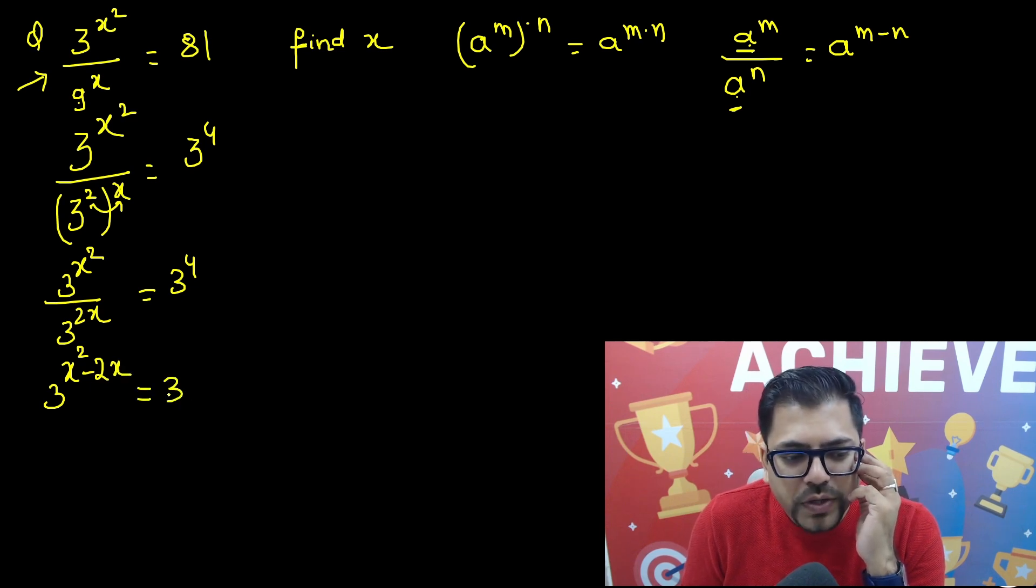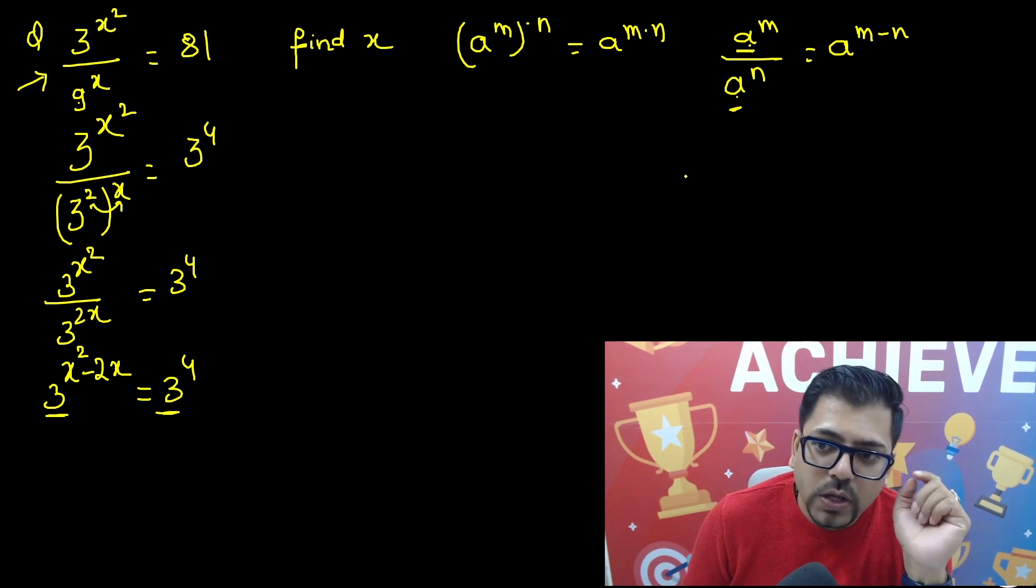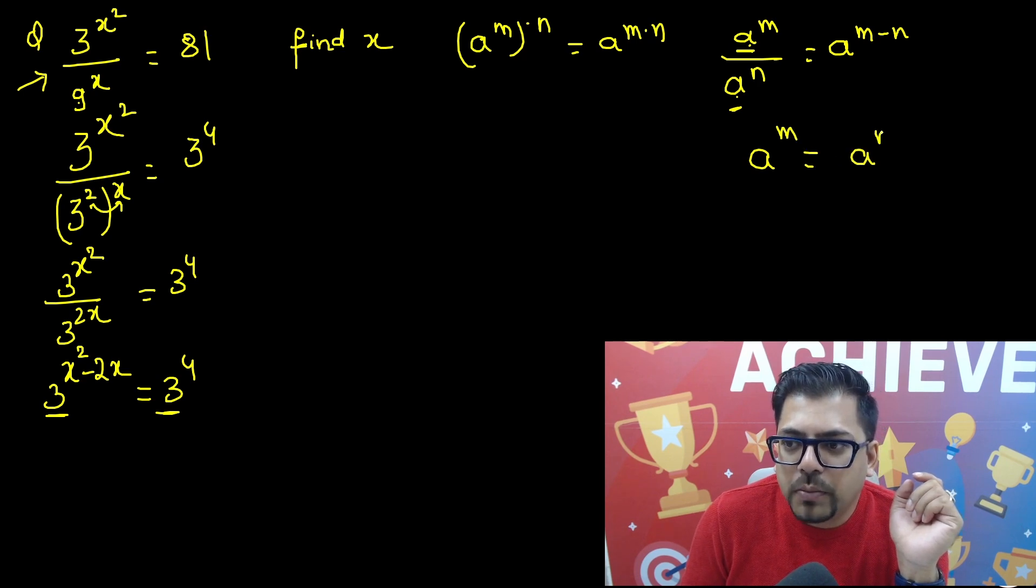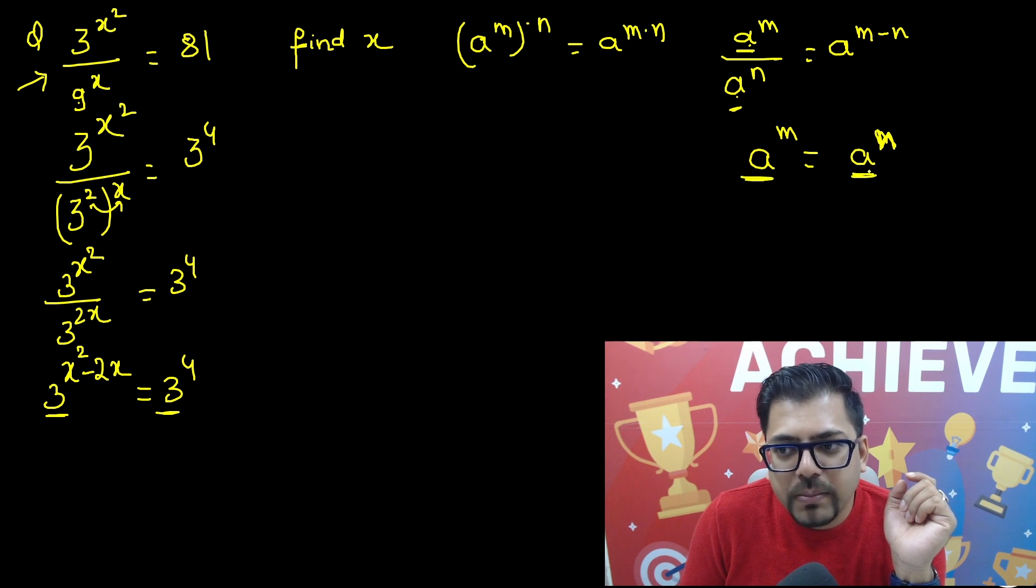So you'll have 3 raised to power x squared minus 2x, because power gets subtracted, and that is equals to 3 raised to power 4. From here we know that both the numbers are equal and their bases are also equal. So whenever two numbers which are equal have equal basis, this means their power must also be equal.